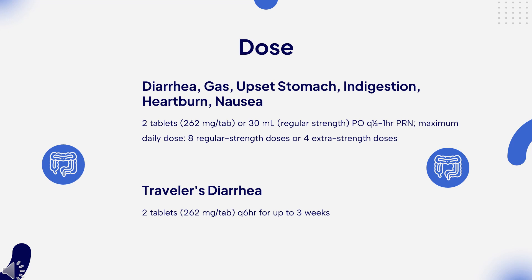Traveler's Diarrhea Prophylaxis: 2 tablets (262 mg per tab) every 6 hours for up to 3 weeks. Helicobacter pylori: 525 mg (2 regular-strength tablets or 1 extra-strength tablet) plus 250 mg metronidazole plus 500 mg tetracycline PO every 6 hours for 14 days, plus an H2 antagonist — helidac therapy pack.